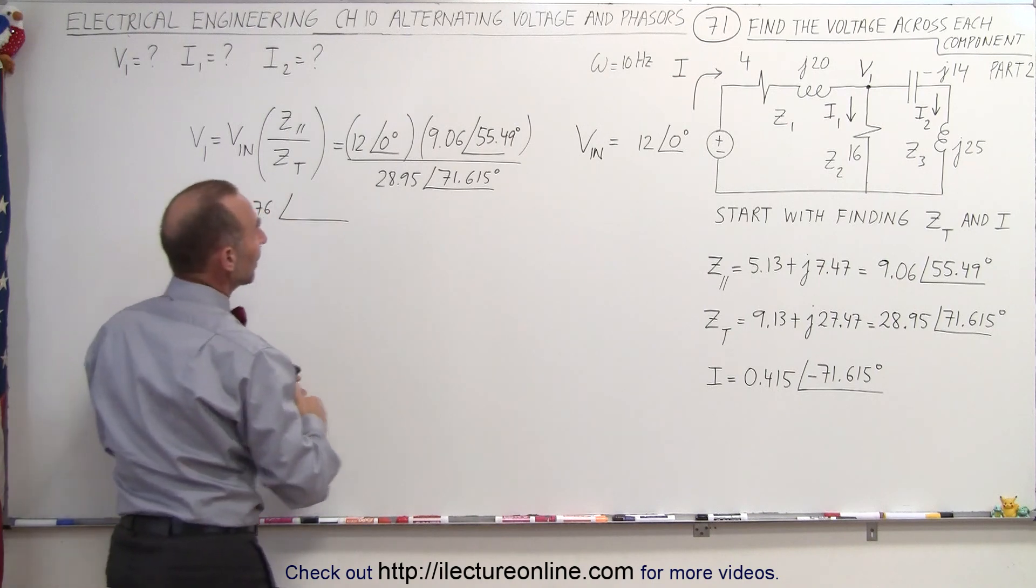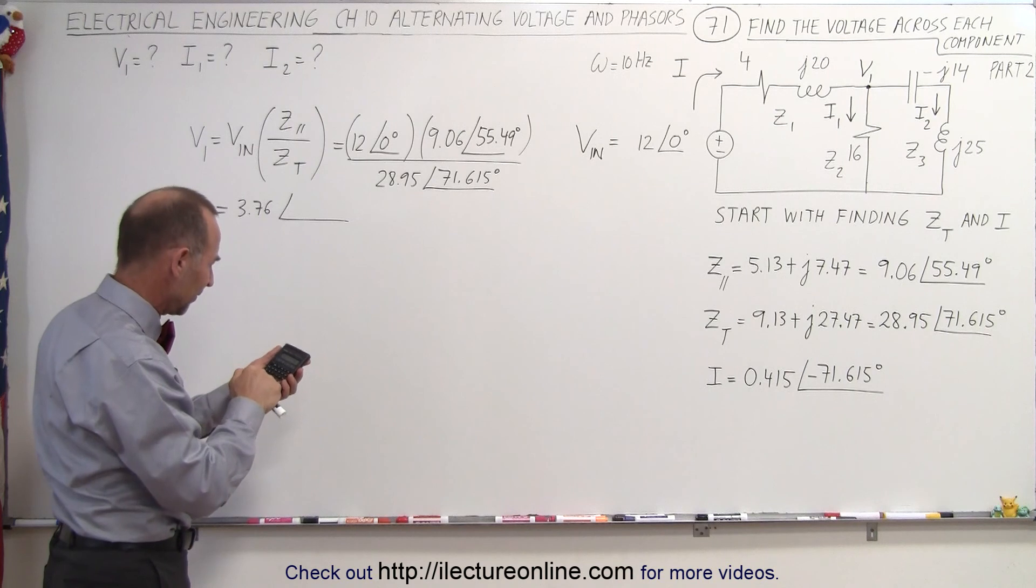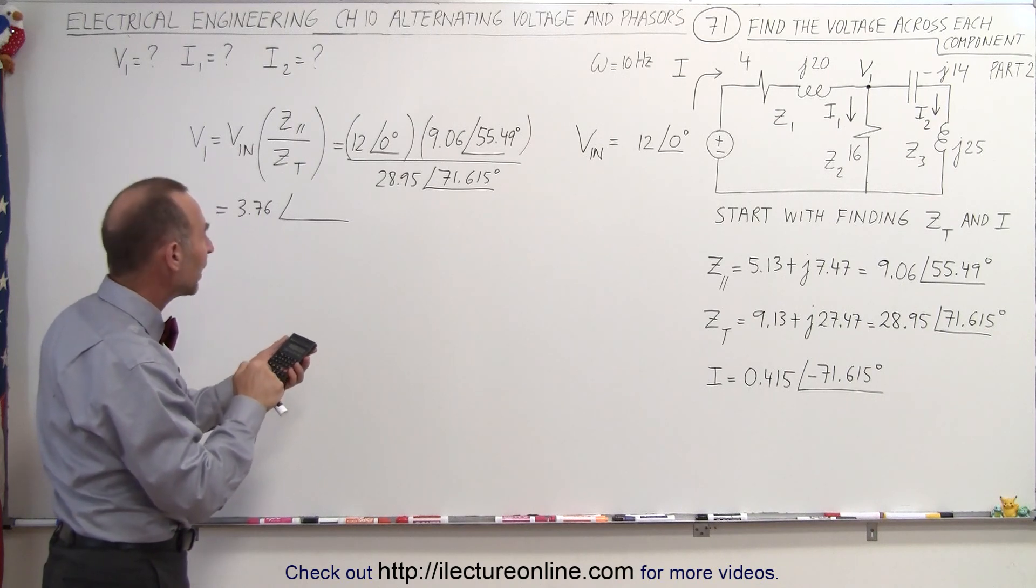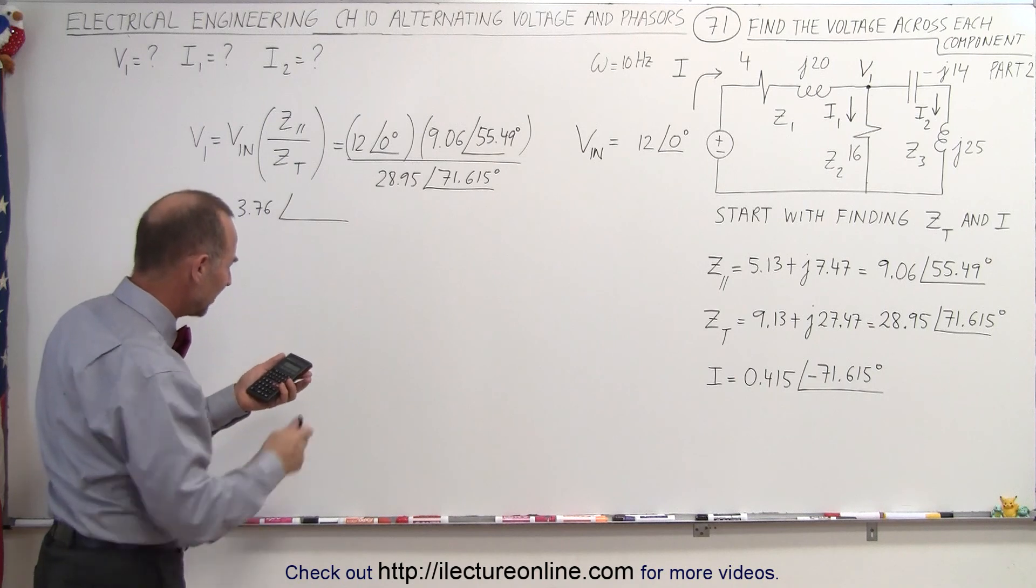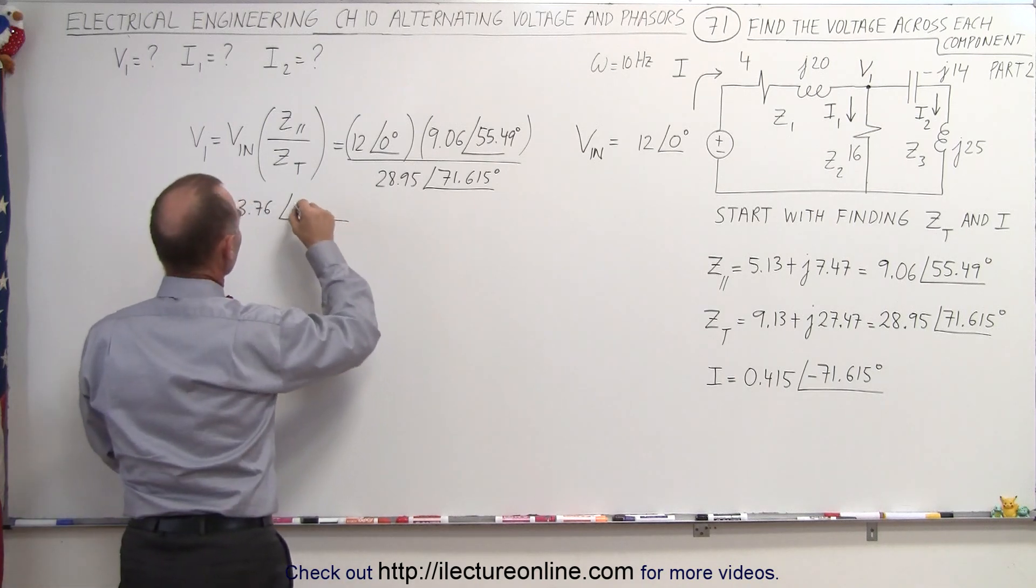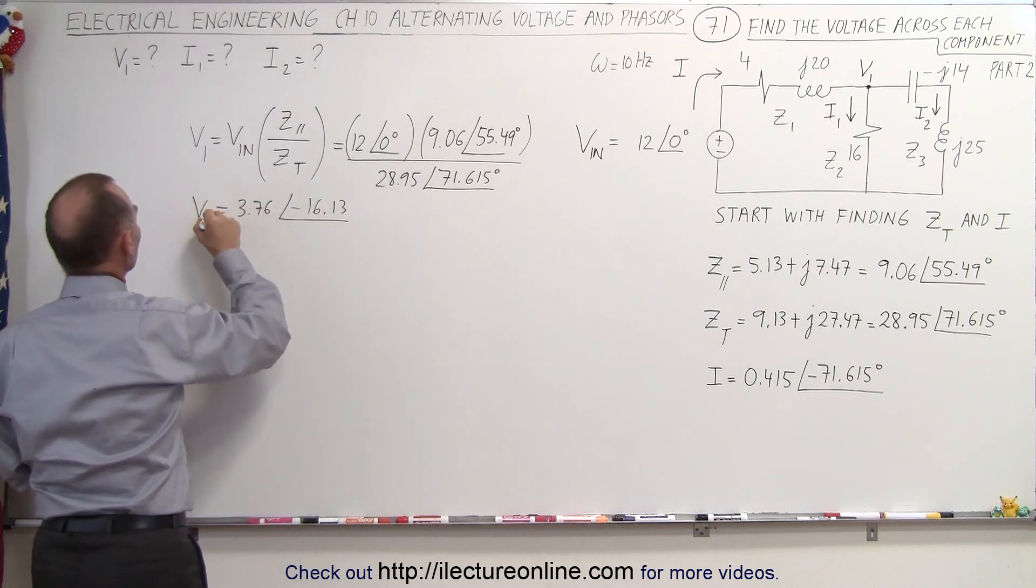And for the phase angle, we take 55.49 and subtract 71.615. 55.49 minus 71.615, and we get minus 16.13. So this is the voltage at 1.